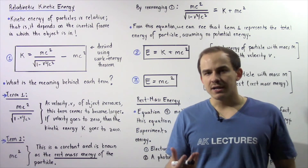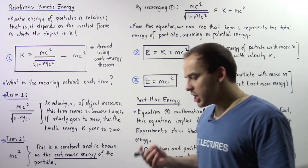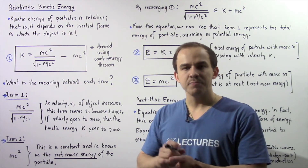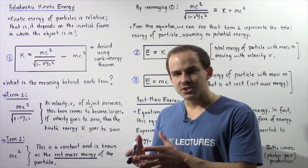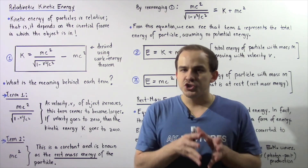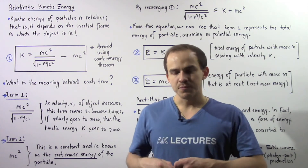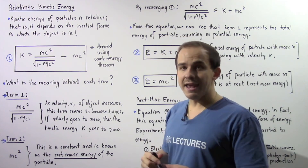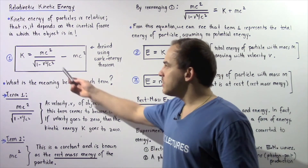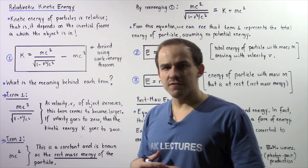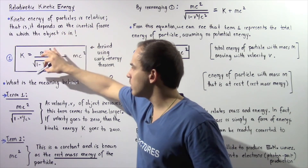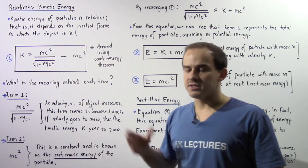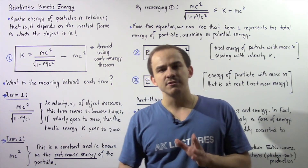In the previous lecture, we discussed the relativistic kinetic energy of a particle. We were able to show that kinetic energy, just like time, distance, length, and momentum, is a relative mechanical quantity — the kinetic energy of a particle changes when we change inertial reference frames. We derived the relativistic kinetic energy using the work-energy principle: KE equals mc squared divided by the square root of 1 minus v squared over c squared, minus mc squared, where m is the mass, c is the speed of light in a vacuum, and v is the velocity.